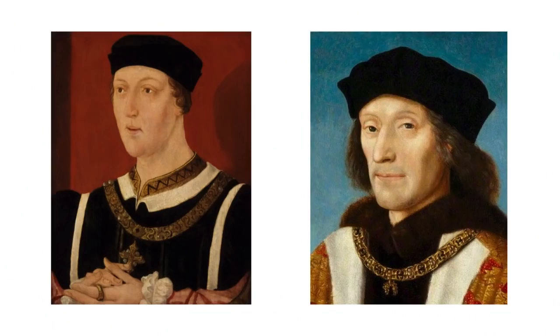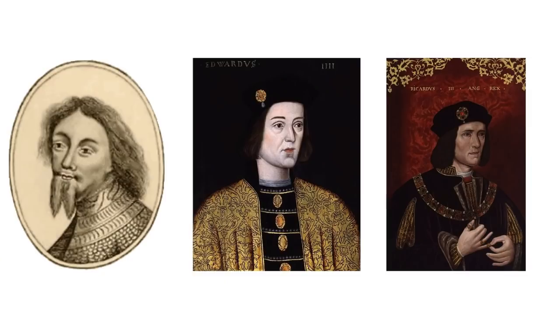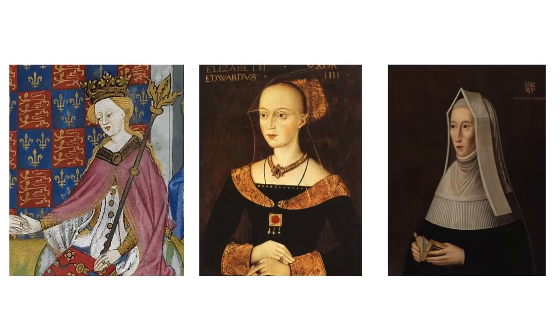Let me introduce the key characters. In the red corner, from the House of Lancaster, we have King Henry VI of England, and also later, Henry Tudor. And in the white corner, representing the House of York, we have Richard of York and his sons, Edward IV and Richard III. We also have some incredible women: Margaret of Anjou, the wife of Henry VI, who fought for the Lancastrian cause with far more ferocity and effectiveness than her husband did.